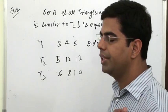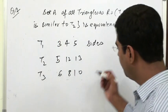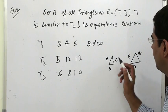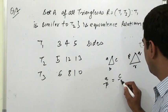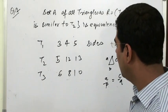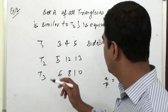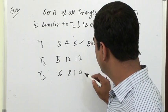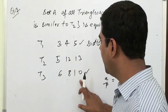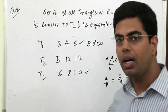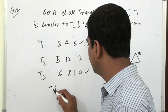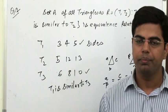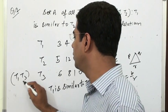अब T1, T2, T3 are related — Relation क्या है? जब दो triangles similar होते हैं तो उनकी sides proportional होती हैं: A/P = B/Q = C/R। T1 और T2 की sides का ratio देखें: 3/5, 4/12 नहीं — checking T1 and T3: ratio of sides 3/6 = 1/2, 4/8 = 1/2, 5/10 = 1/2. So ratio of T1 and T3 are in same proportion, so T1 is similar to T3, hence T1 is related to T3.